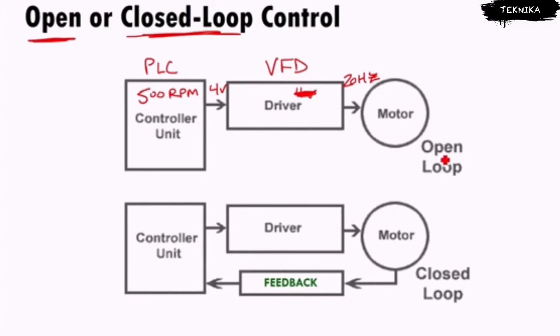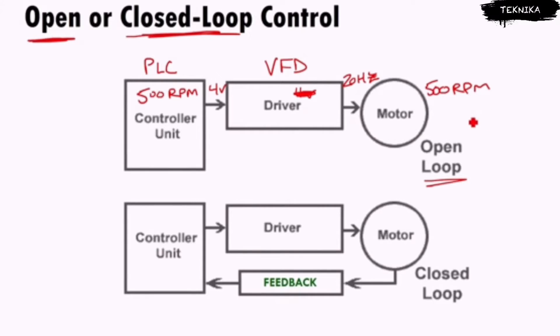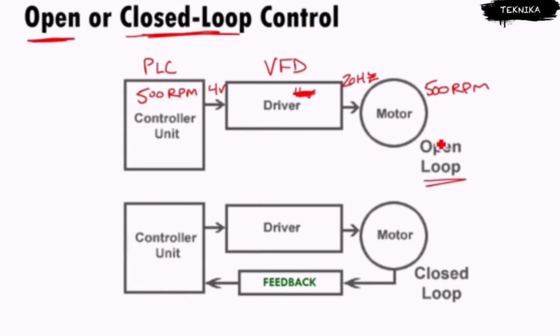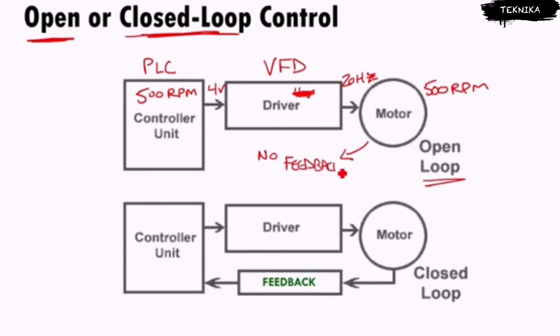The trouble with this open loop system is I have no feedback. I'm telling this thing to go 500 RPM, but I have no idea if it is or isn't going 500 RPM. That may work very well, but depending on the motor or the linkages hooked up to that motor, it may be running at 400 RPM. Open loop means I have no feedback to monitor what's actually happening.